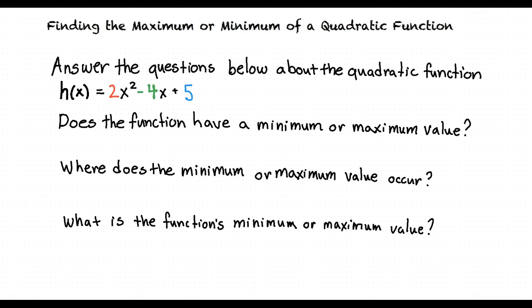First, we must figure out whether our function has a minimum or maximum value. Recall that to do so, we have to see if the leading coefficient, or the a value, of our function is positive or negative. The leading coefficient for this function, which is in front of x squared, is 2. And because it's positive, our function will have a minimum point. Because this quadratic function has a positive leading coefficient, it will have a U-shape, which gives the function a minimum point.